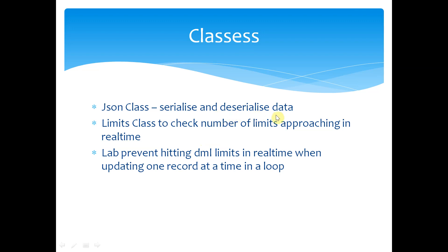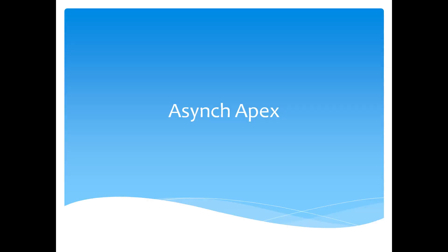A couple of other advanced classes in Apex are the JSON class, which helps you serialize and deserialize JavaScript objects — serialize an object and send it across. If you have a JSON string, you can make it into a JSON object and send it to another HTTP callout. We were also talking about limits — there is a Limits class at runtime. If you want to check whether you're going to hit the DML limits, you can use the Limits class.